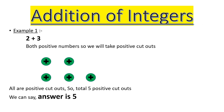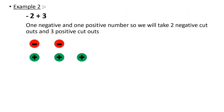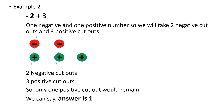Now the next example: minus two plus three. Two is a negative number and three is a positive number. So we take two negative cutouts for minus two and three positive cutouts for three. A negative and a positive cancel out, another negative and positive cancel out, and we are left with one positive. So plus one is the answer.